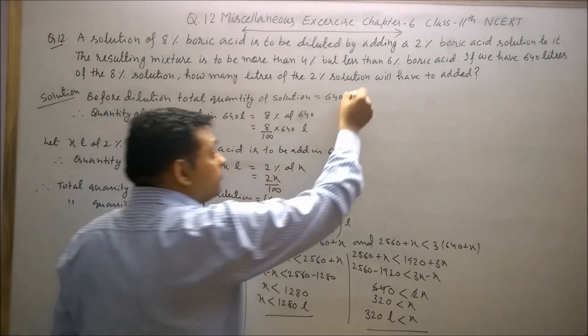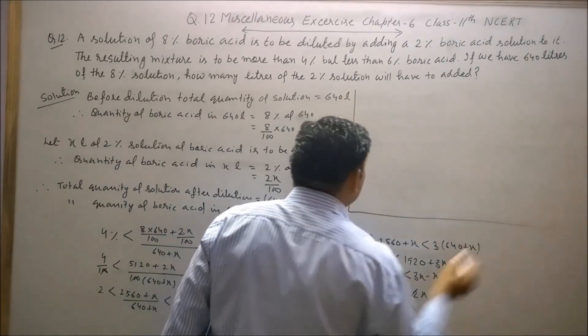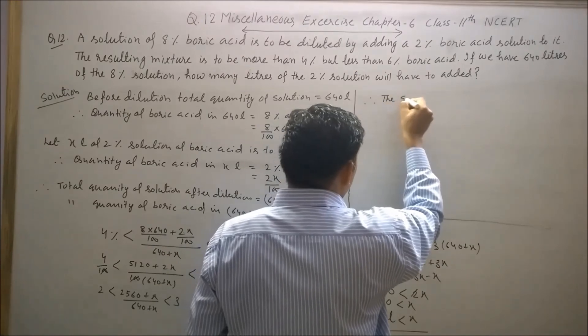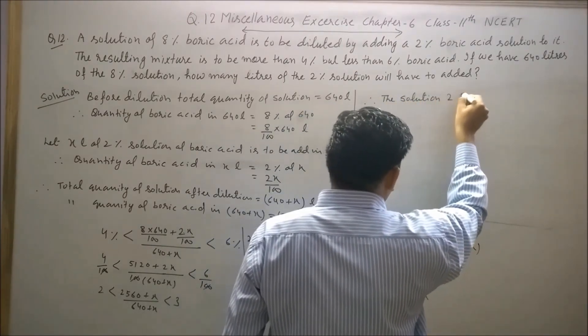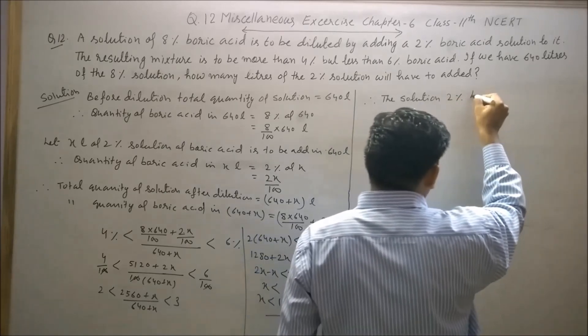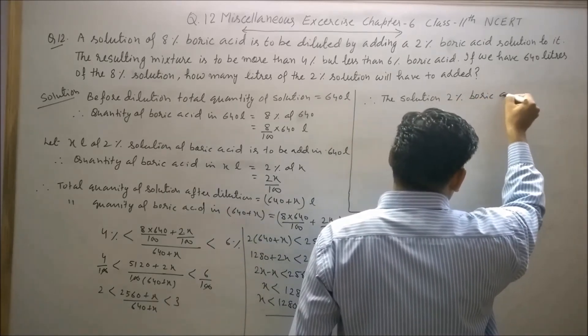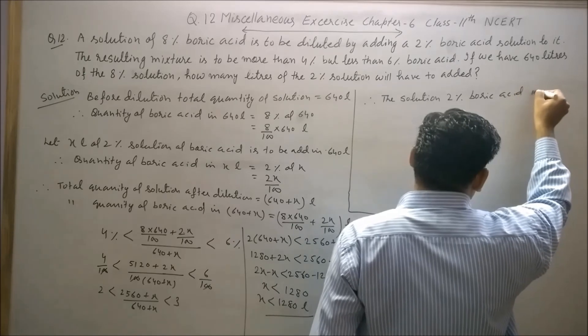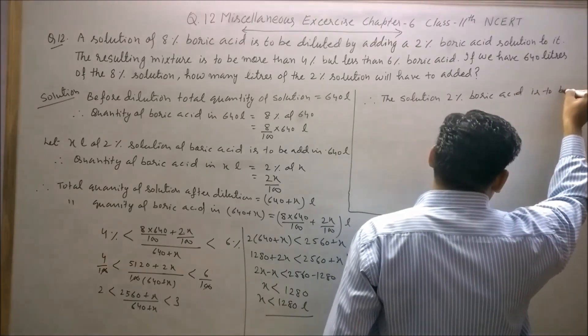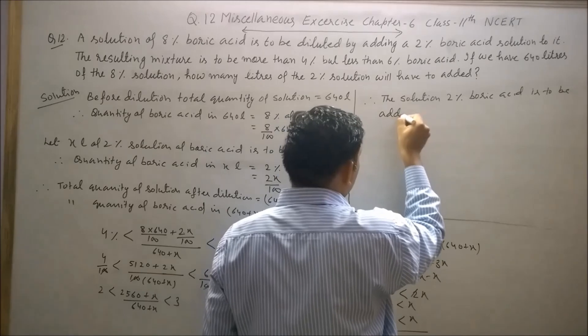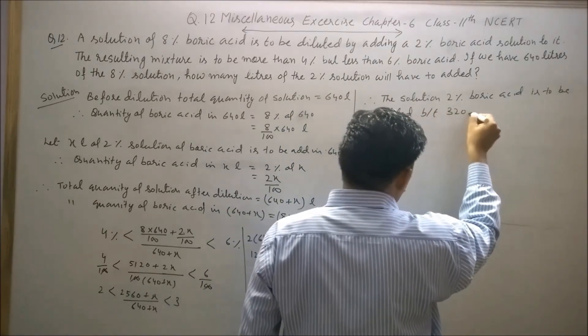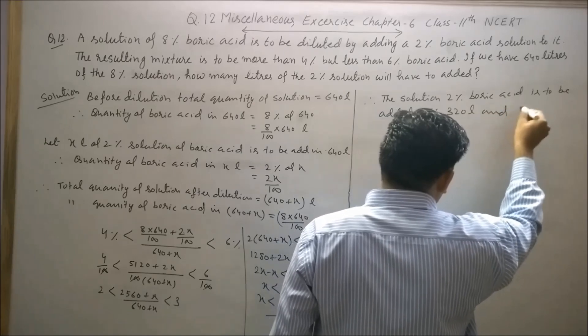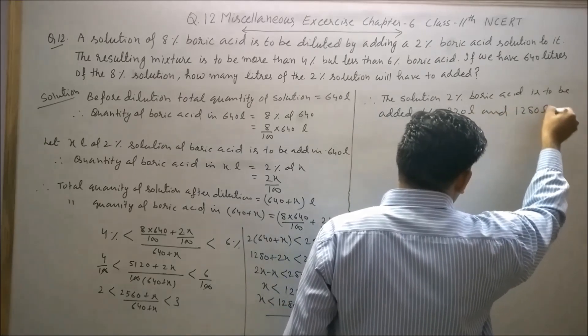Therefore, the solution of 2% boric acid is to be added between 320 liters and 1280 liters.